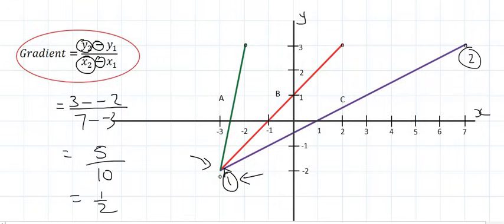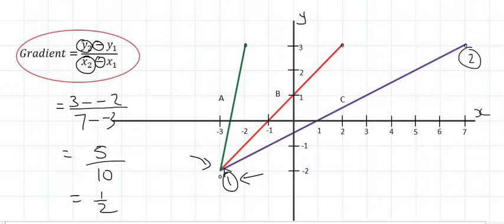So the gradient of a line tells us how steep it is. We have a mathematical formula that helps us to calculate it when we are on the xy diagram, and this is that formula.